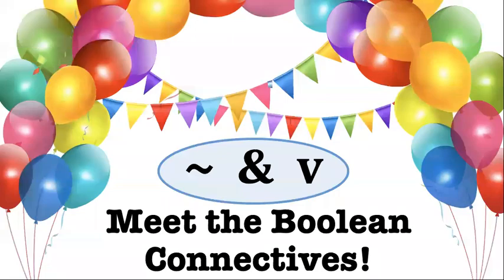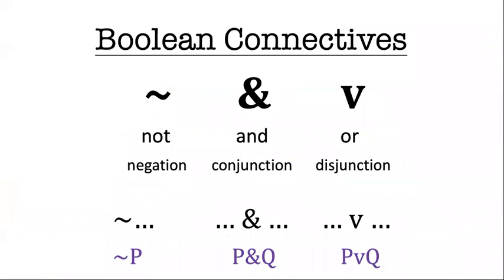Hi folks, welcome to our first logical system called Bool. The centerpiece of Bool is three symbols called the Boolean connectives. The names of them are negation, conjunction, and disjunction.